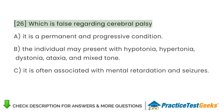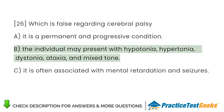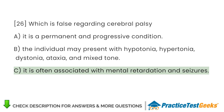Which is false regarding cerebral palsy? A. It is a permanent and progressive condition. B. The individual may present with hypotonia, hypertonia, dystonia, ataxia, and mixed tone. C. It is often associated with mental retardation and seizures.